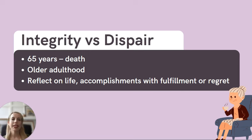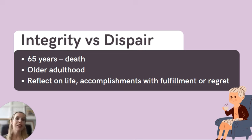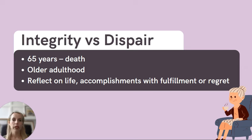And there you have it. These stages are not linear — a person may not resolve everything at a certain stage and may even revisit a stage later to work through some difficulties. This theory reinforces the importance of the experiences we all have in early childhood, with five of these eight stages occurring before adulthood.